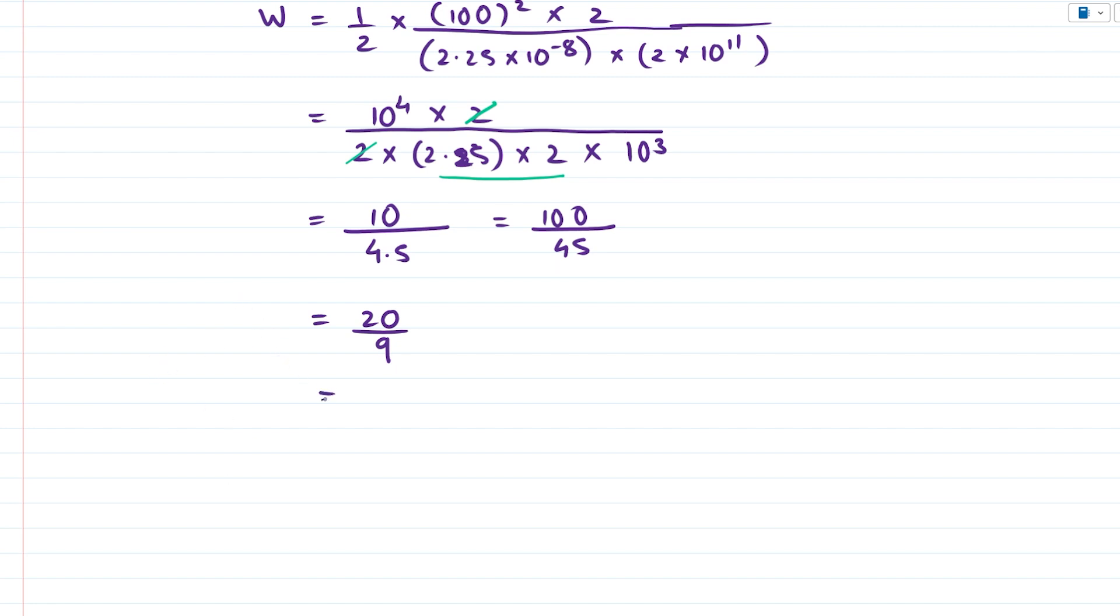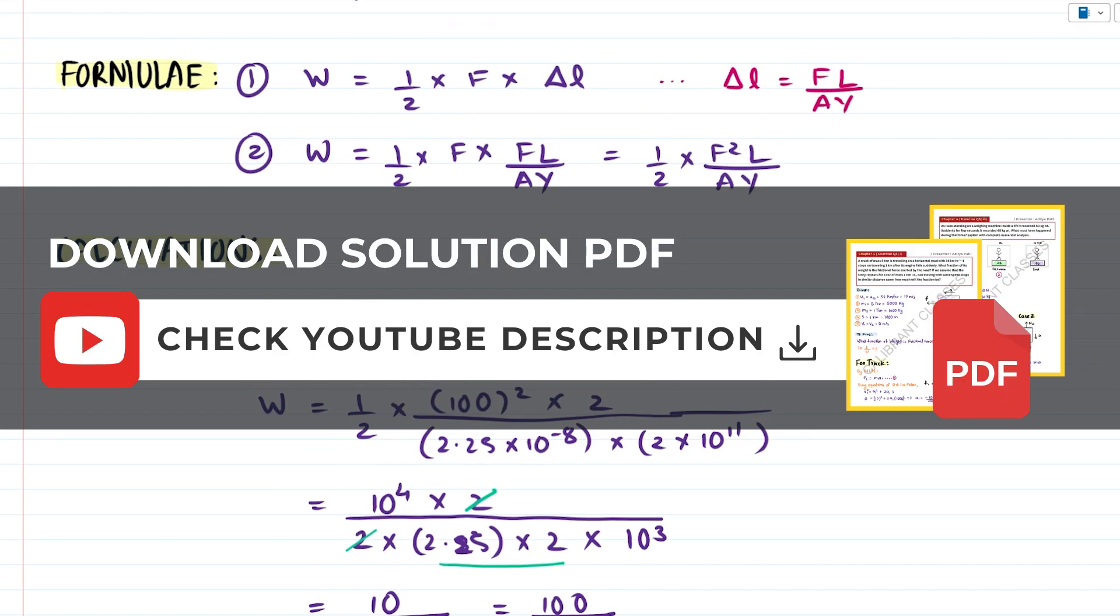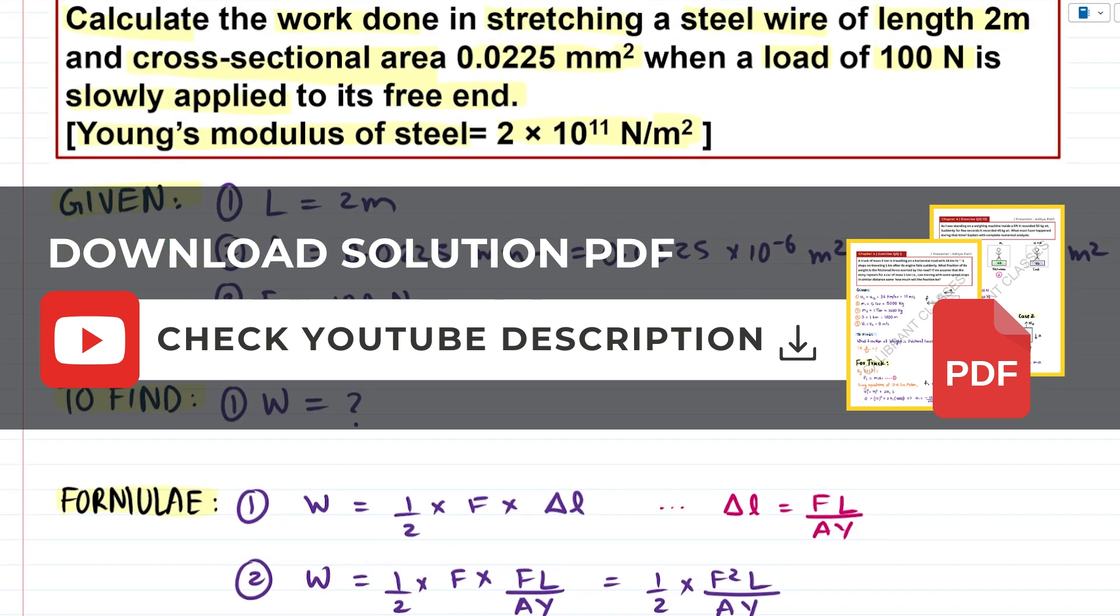So this can be simplified as 20/9, so 100 divided by 5 which gives us 20/9 and now if we were to divide 20 by 9 we get the value as 2.222 and so on. So this is the value for our work done so it is 2.222 joules. Work done while stretching our steel wire is said to be 2.22 joules. So that's it. If you want the PDF of this solution make sure to check the link given in the description. Have a nice day.